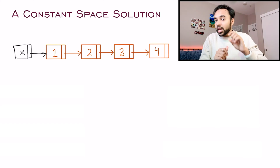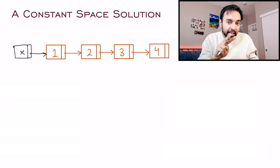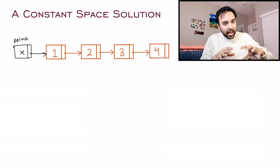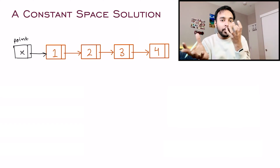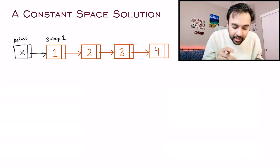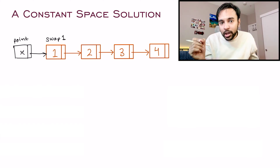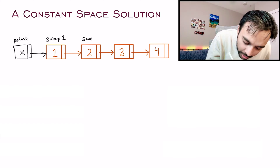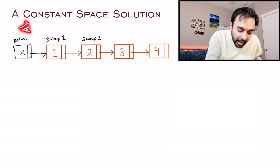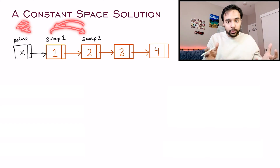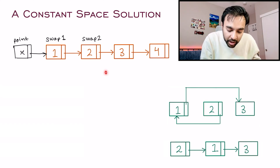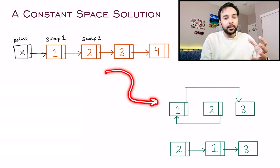So now, trying to understand the problem again: you have to swap every two adjacent nodes. The dummy node gives you a starting point — call it 'point'. After this point, you perform all your swappings. The first node to swap is called swap one, and you swap it with the second node, called swap two. As a programmer, it's a good idea to keep your target in sight — label where you need to end up so you can work toward it step by step.